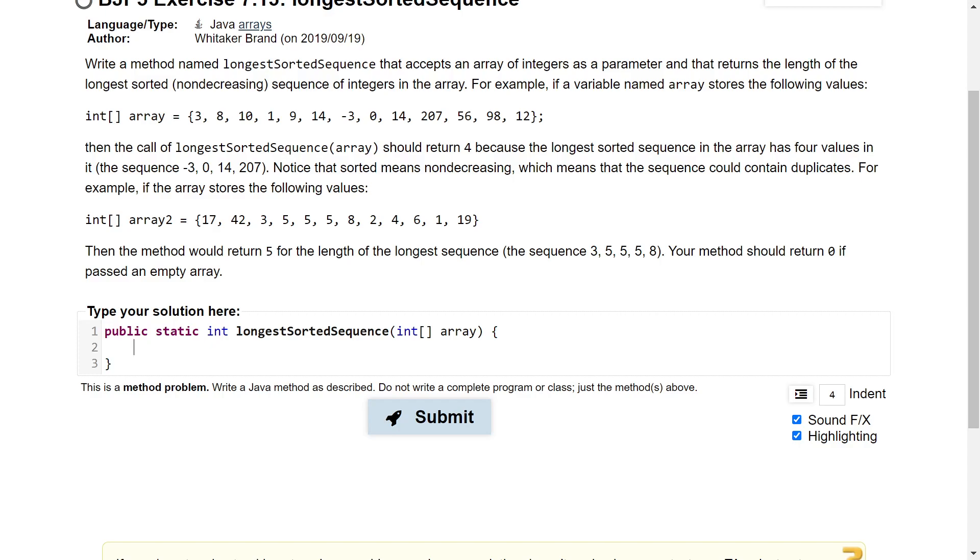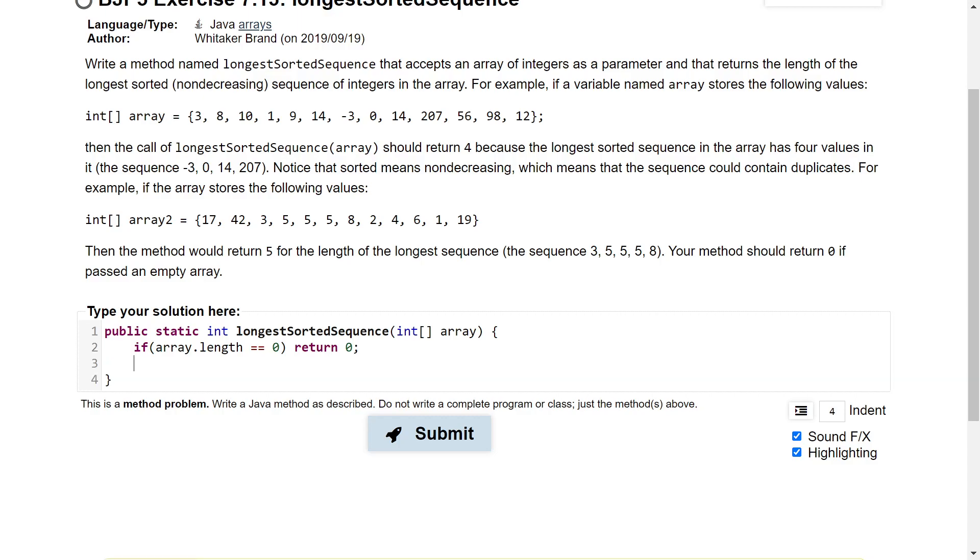And let's go ahead and get this first case out of the way: your method should return 0 if passed an empty array. And how can we check for an empty array? Well, we can check for an empty array by seeing if the length of the array is 0. So if the length of the array is 0, then the problem reads that we should return 0. So let's go ahead and return 0.